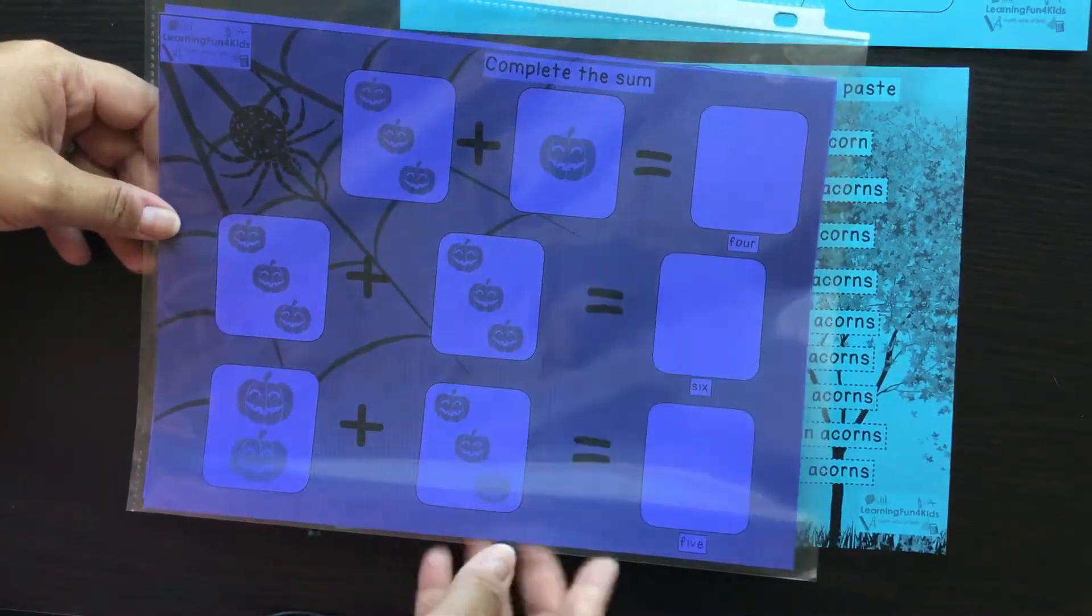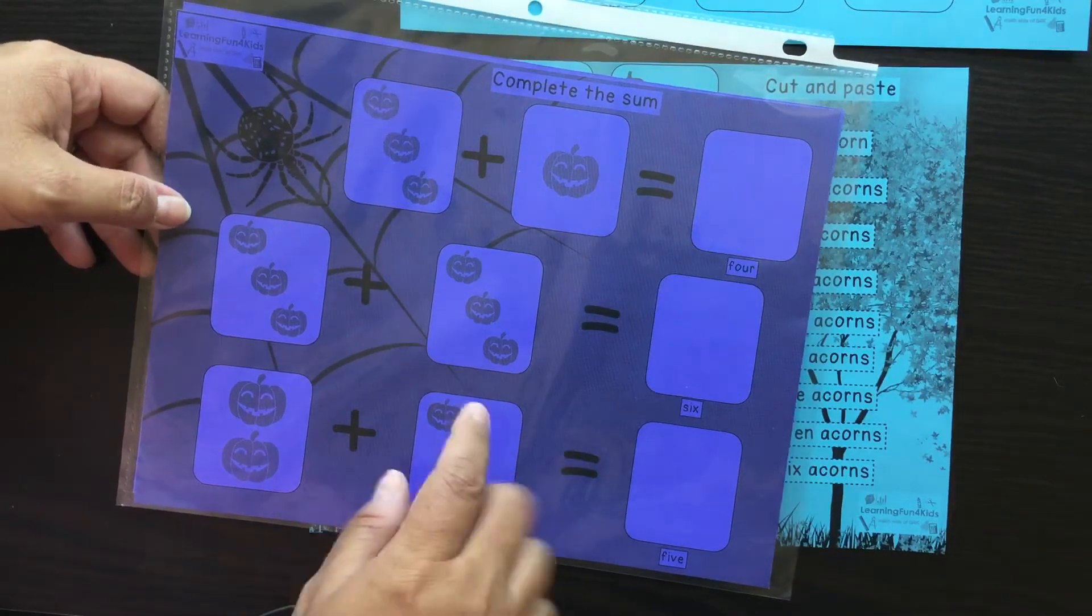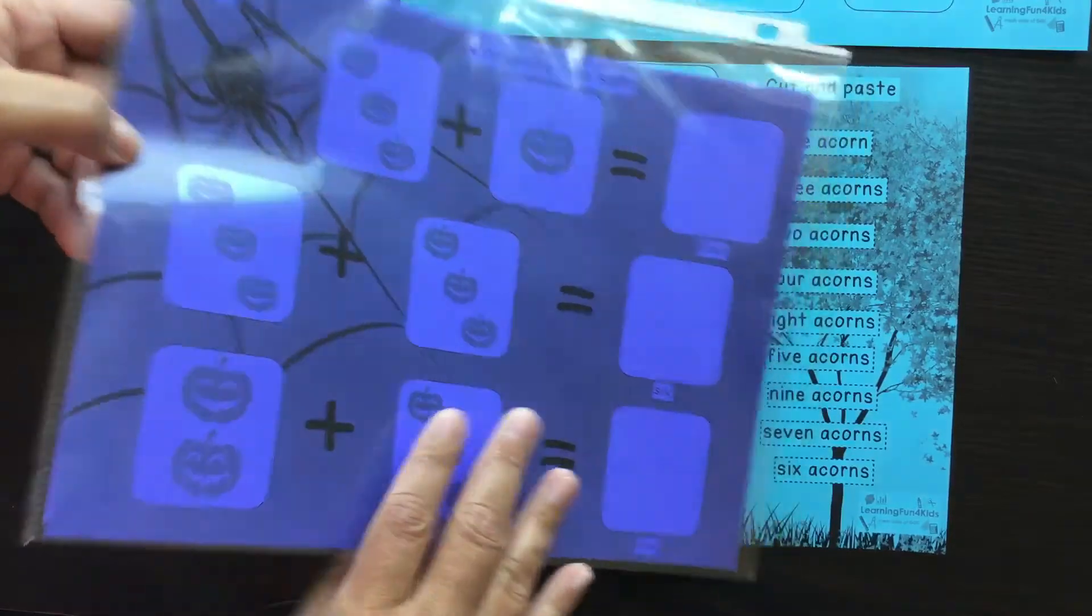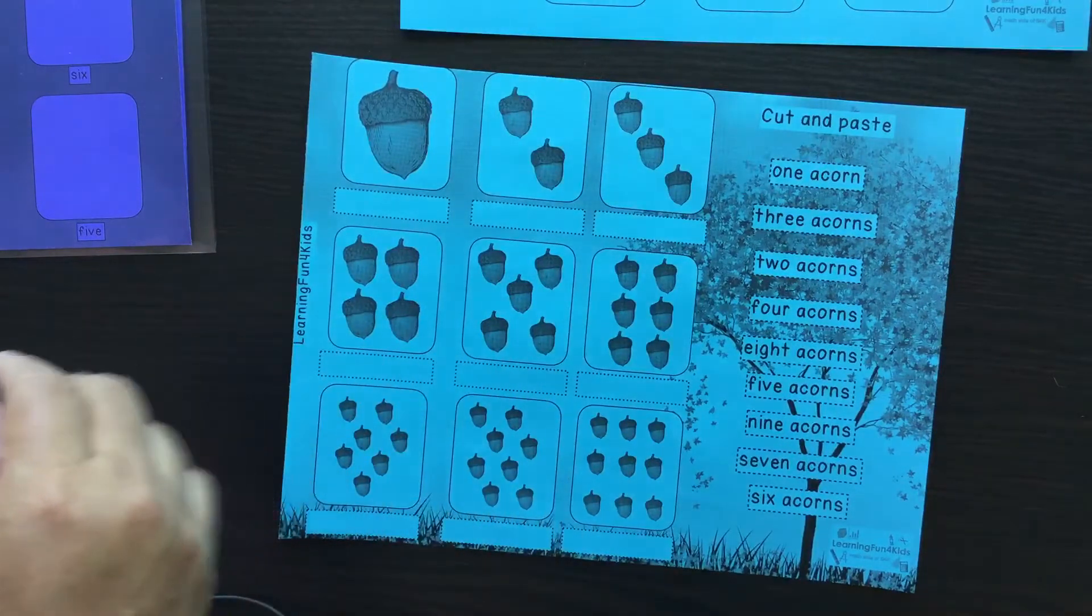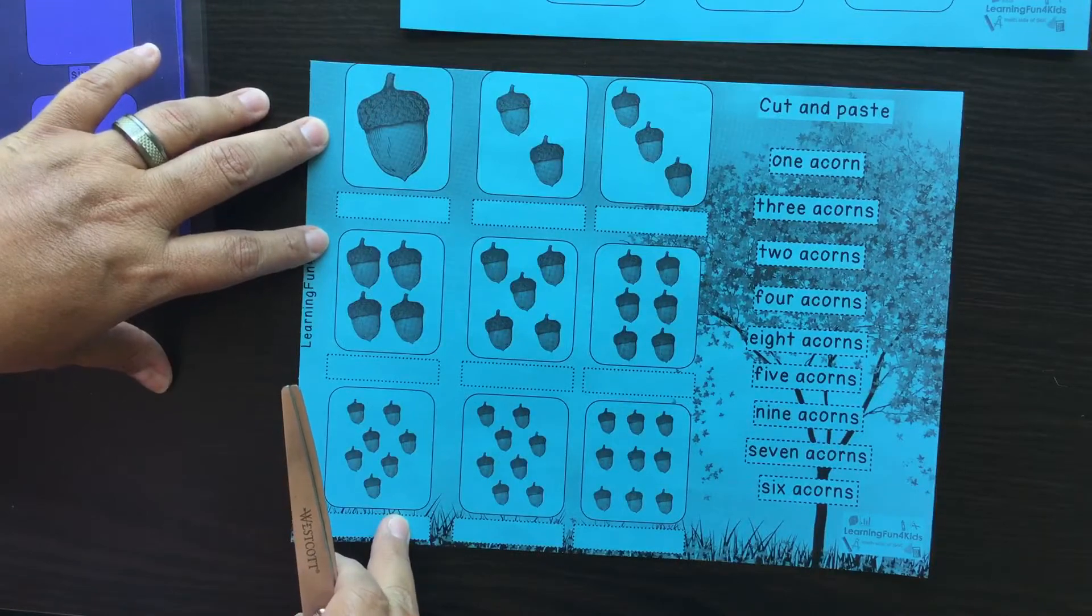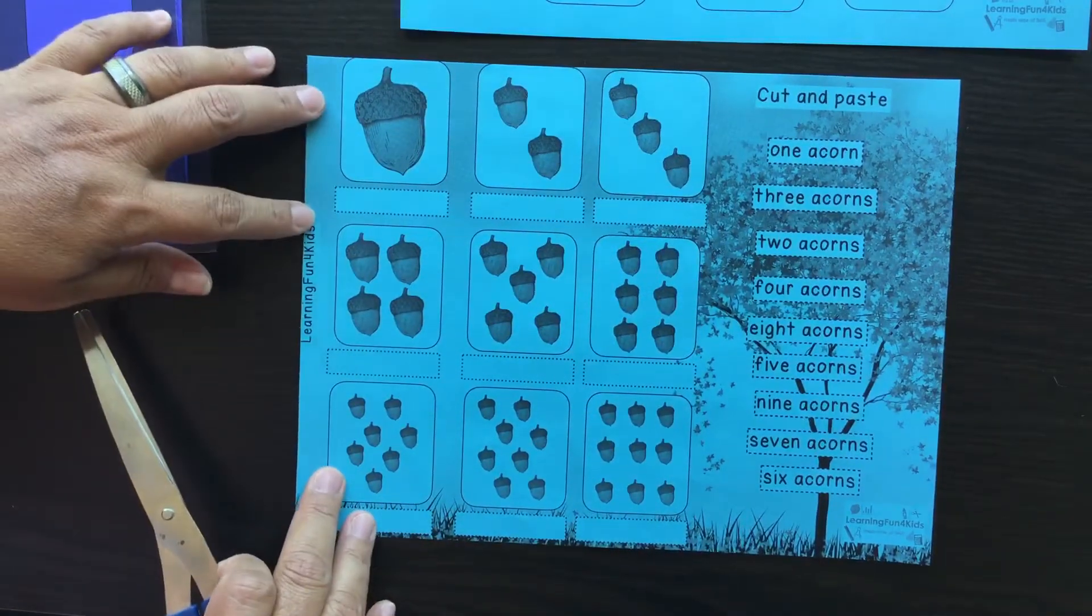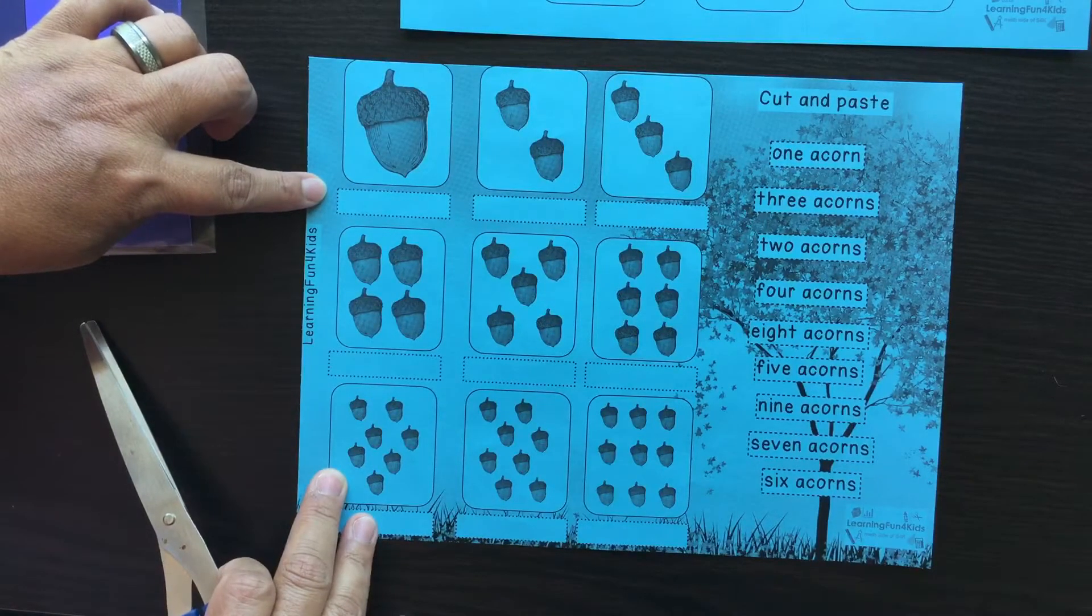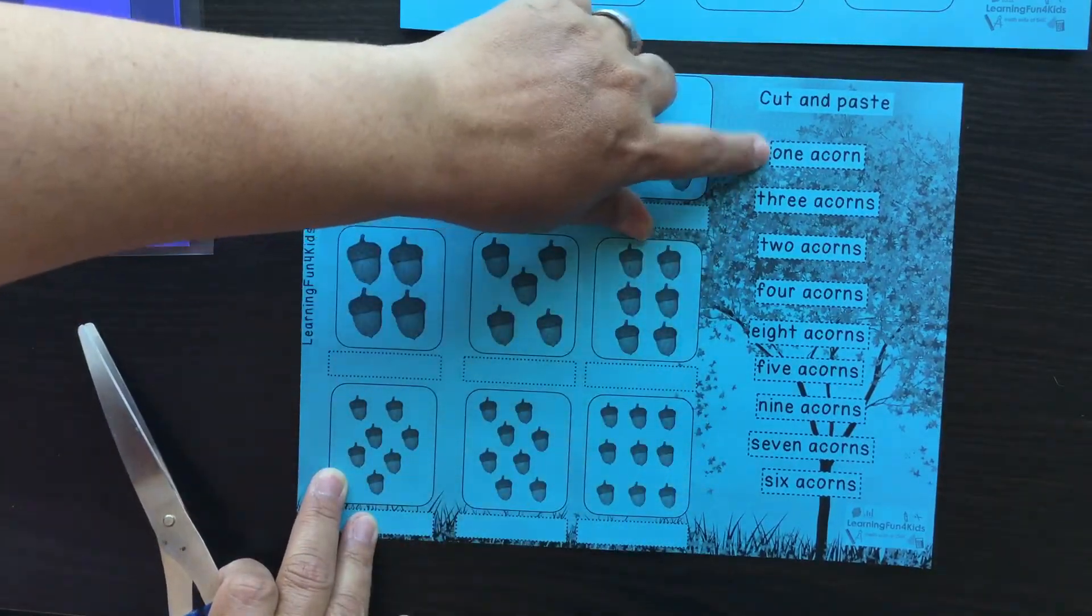One of the things I have here is these sheets which are to complete the sums, this part is only the addition part. I use a sheet protector to actually keep on using the same sheets over and over. Before we get started, one of the first things you want to do is actually introduce the numbers, and what fun way is to cut and paste. Notice how these are not in order, so you actually want to help your child or students go and look for what that number is. This is one acorn, where do you see here one acorn?